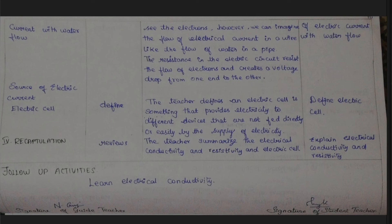The source of electric current is the electric cell, which is also defined in this section. In the recapitulation step, the teacher summarizes electrical conductivity, resistivity, and the electric cell. For follow-up activities, students can further learn about electrical conductivity and resistivity.